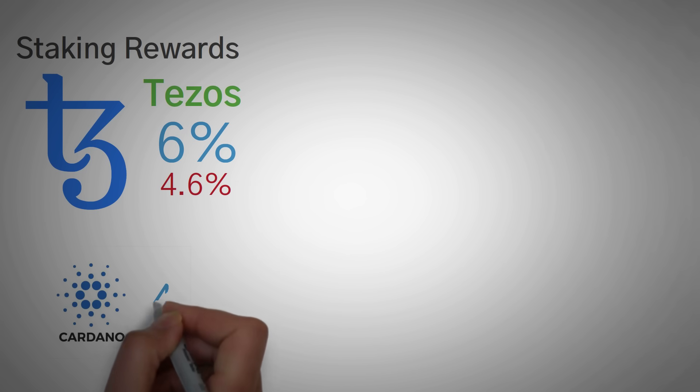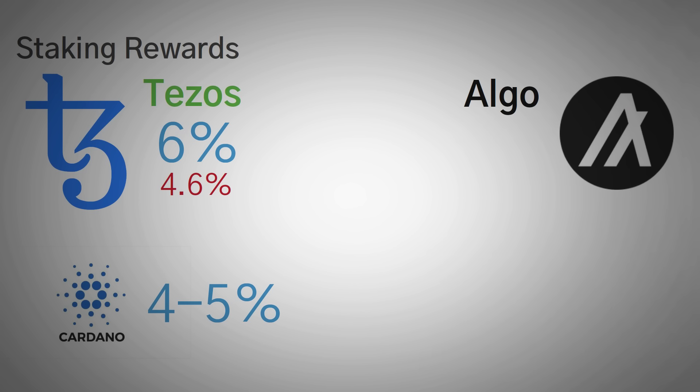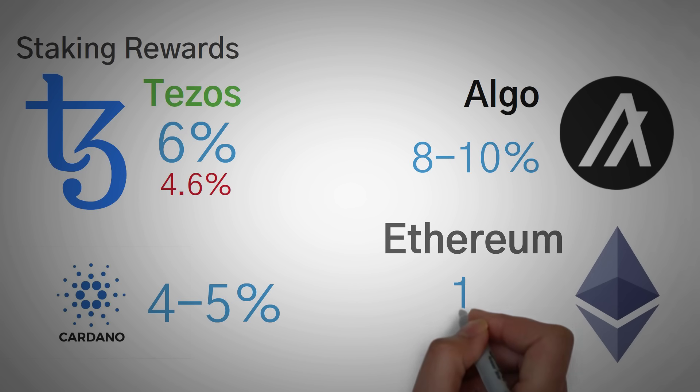Second, Cardano is another coin that does staking. They will give out around 4% to 5%. The Algo coin rewards you with around 8% to 10% a year. And lastly, Ethereum, which is actually switching to Ethereum 2.0, could be up to 15%, but more reliably, probably around 4% to 7%. But this won't happen for at least another year.